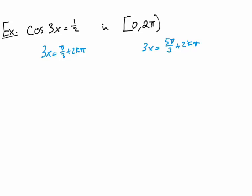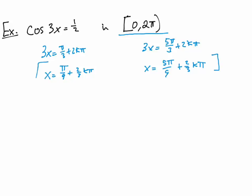Dividing by 3, we get x equals pi over 9 plus 2/3 k pi, and x equals 5 pi over 9 plus 2/3 k pi. At this point nothing different has occurred compared to the previous example. The difference now is we only want values in the interval [0, 2π]. We can't leave the solution in this form, because plugging in k=10 or k=−8 would put us outside the interval.